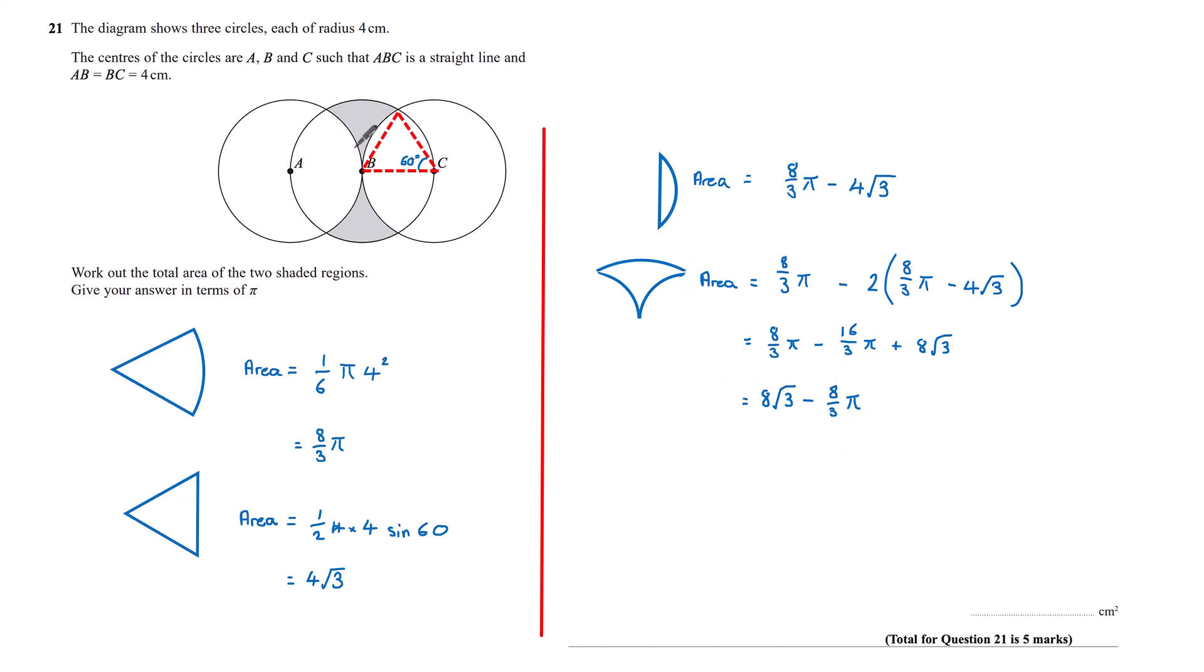Now I know the area of one of those shaded parts, the combined area for both is two lots of this eight root three minus eight thirds pi, which is 16 root three minus 16 thirds pi.